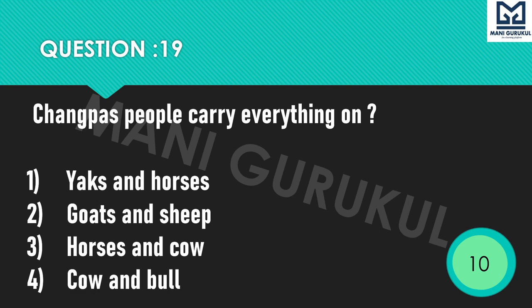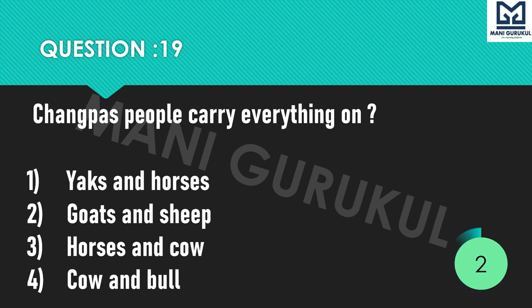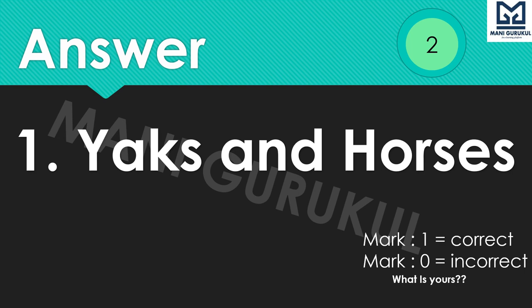Question 19: Changpa people carry everything on which animals? Options: 1st Yak and Horses, 2nd Goat and Sheep, 3rd Horses and Cow, 4th Cow and Bull. Your time starts now. Time's up. Answer is 1st: Yak and Horses.